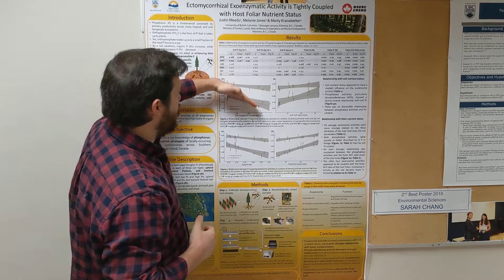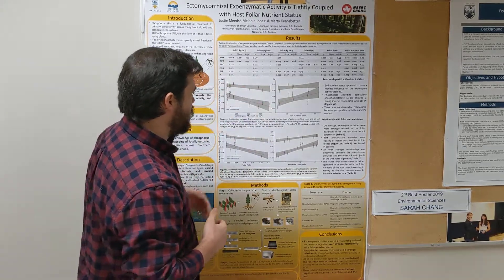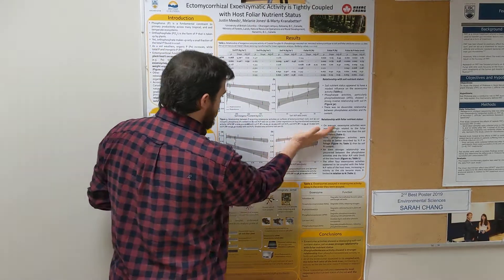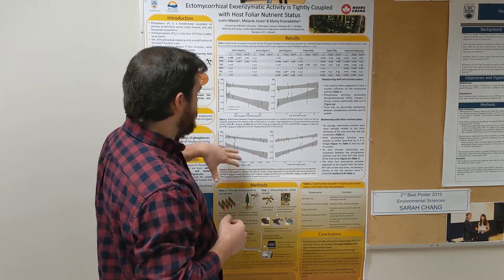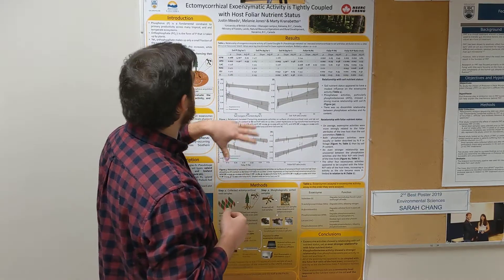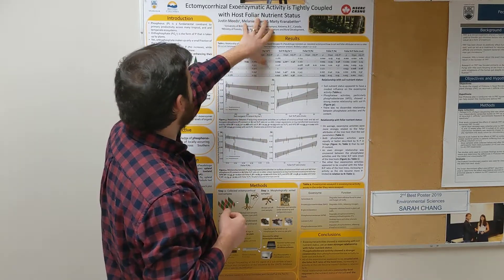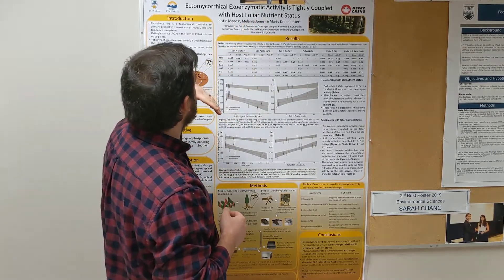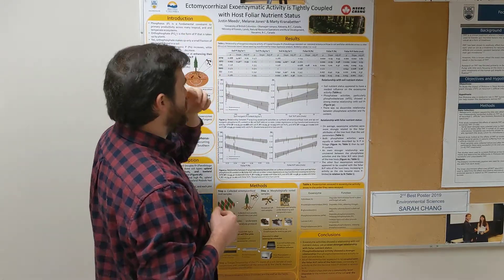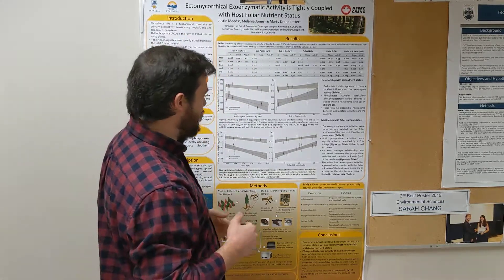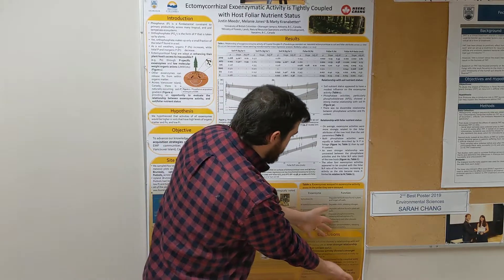You can see some relationships — there's a negative relationship here, a more positive relationship here for what they were studying, which was nutrient status in ectomycorrhizal, which is a cool thing. And then they have their conclusions at the very bottom.